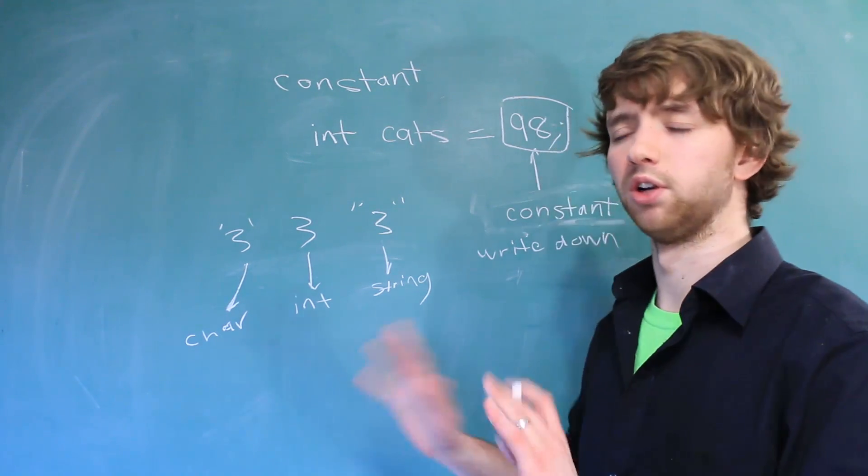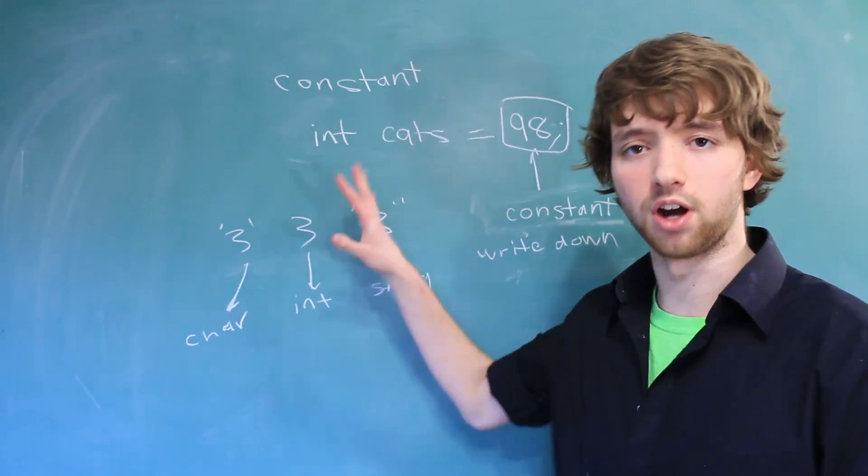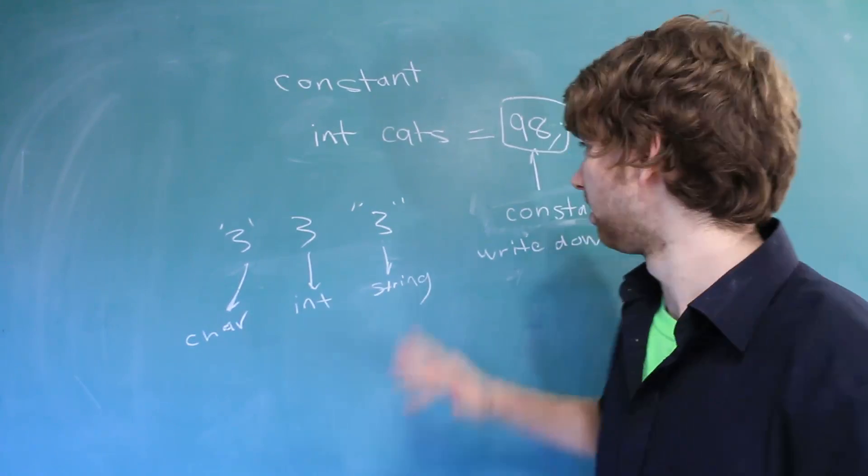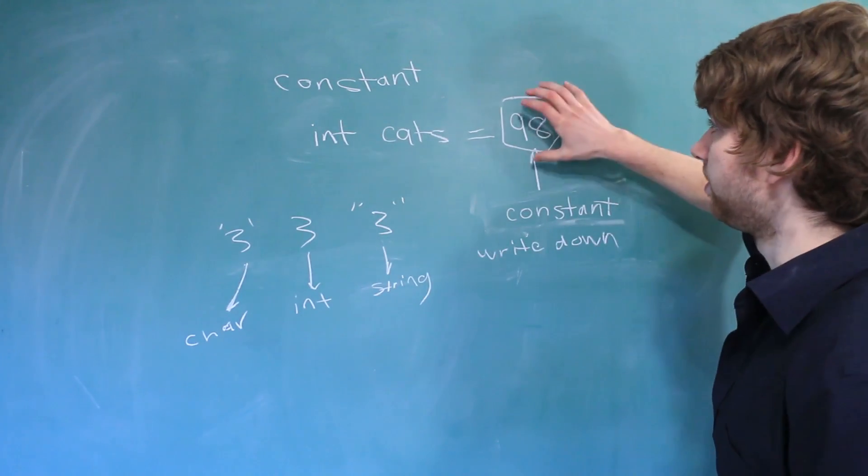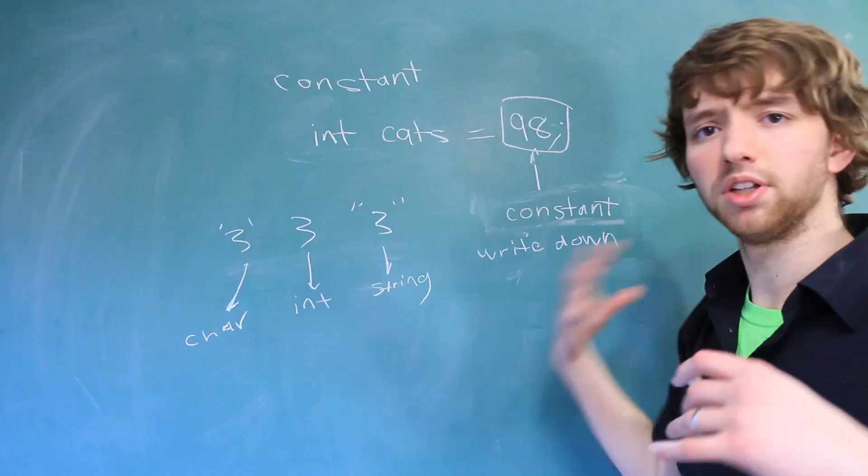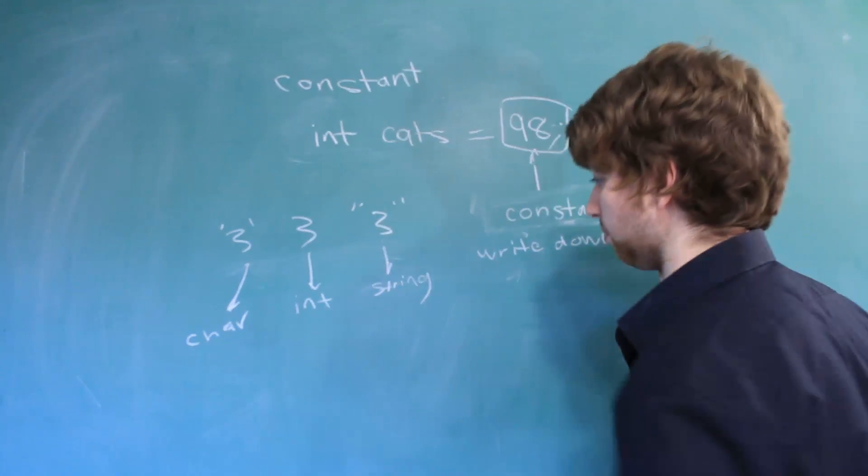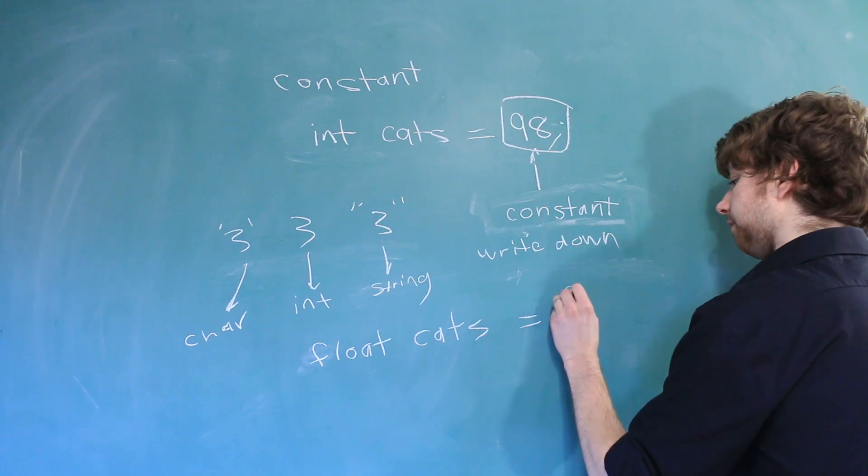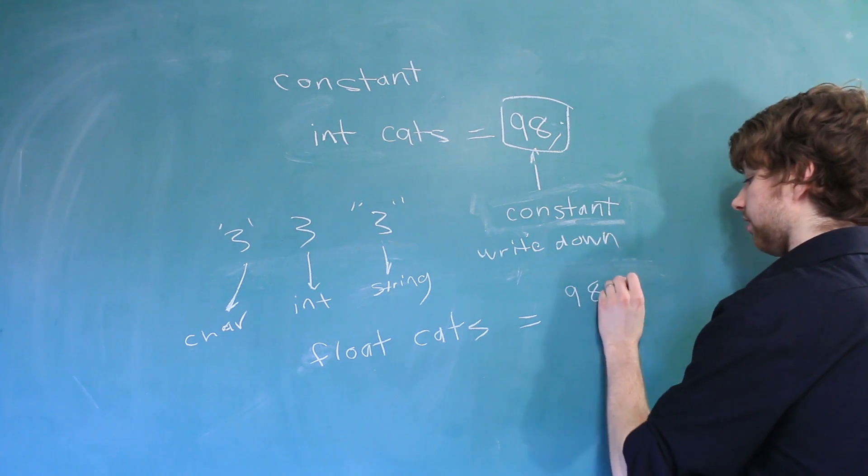Generally, you don't have to worry a whole lot about the data types of constants. I'm just trying to give you some extra detail. For example, in this situation, this is interpreted as an int. But let me give you another example. Let's say we do something like float cats equals 98.5.